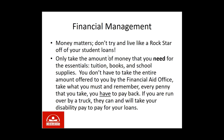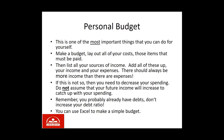Regarding finances — money matters. Don't try to live like a rockstar on your student loans. Only take the amount you need for essentials: tuition, books, and school supplies. You don't have to take the entire amount offered by the financial aid office. Every penny you take, you have to pay back. If you're run over by a truck, they can and will take your disability pay to repay student loans. Have a personal budget — it's the most important thing you can do for yourself. List all your costs, list all your sources of income, and add them up. There should always be more income than expenses. If not, decrease your spending. Do not assume your future income will increase to catch up with your spending. You probably already have debts — don't increase your debt ratio.